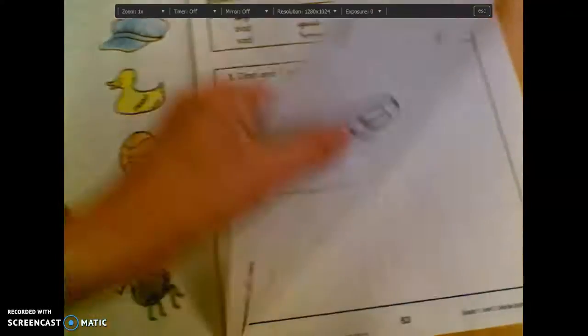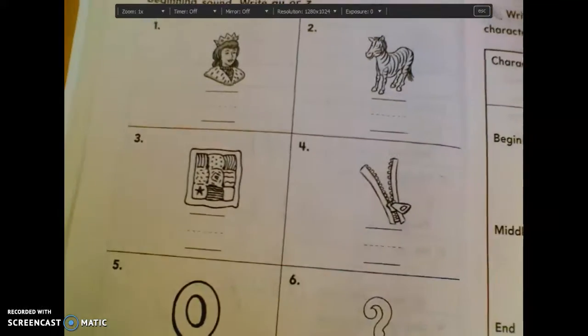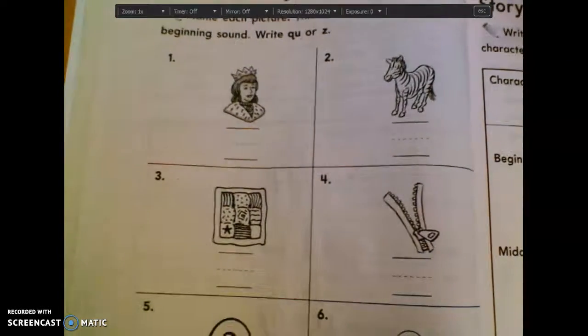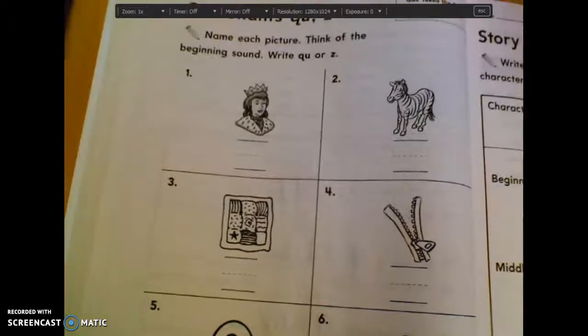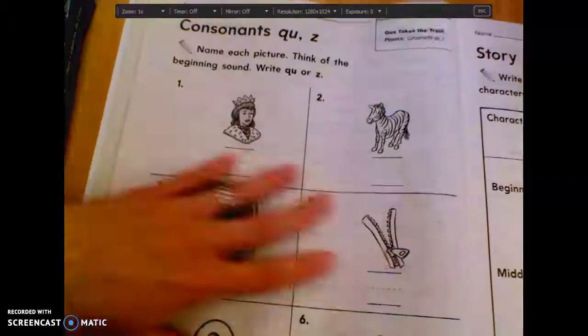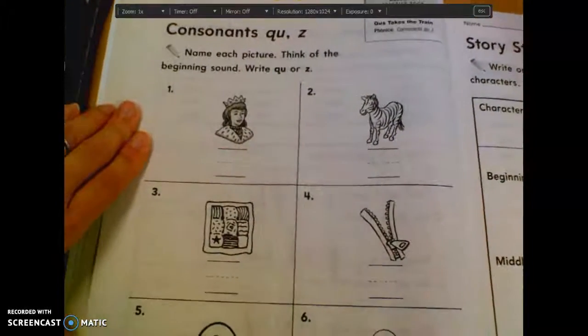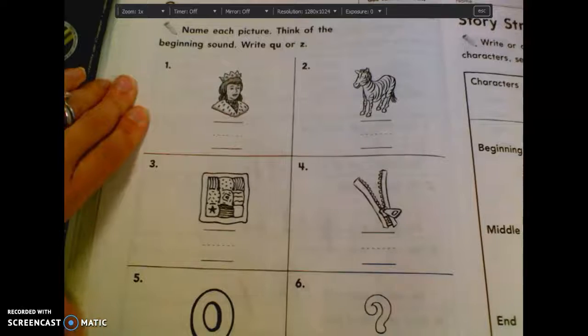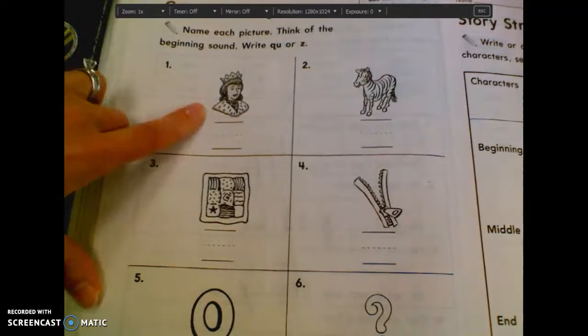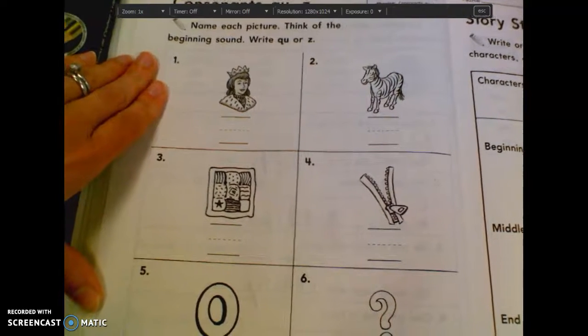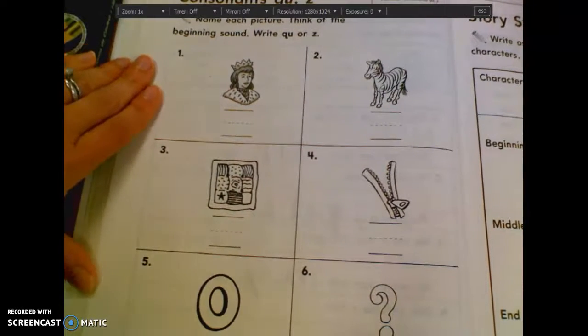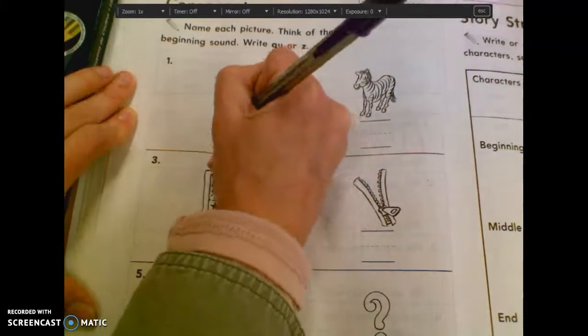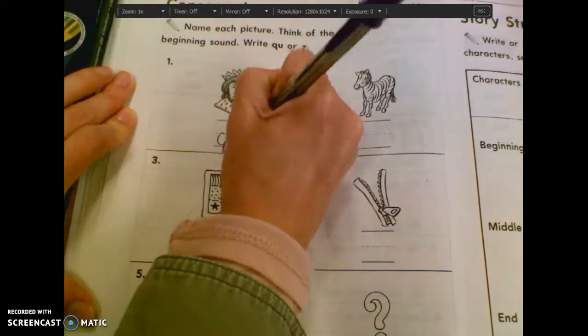We have consonants Q, U, and Z. It just says to name each picture. Think of the beginning sound, right? Q, U, or Z. So this one should be pretty easy. Number one, what is that a picture of? Adam? A queen. Queen starts with a Q, U. So you're going to write Q, U.